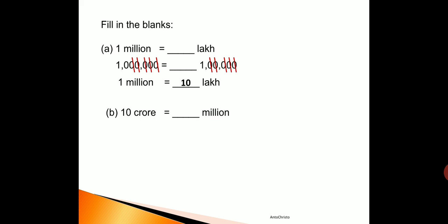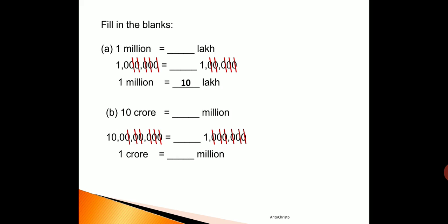Let's go to another one. The question is: ten crore is equal to dash million. First we write it in numbers — one side is ten crore, the other side is one million. Now we strike the zeros from the right corner: first zero each side, second, third, fourth, fifth, sixth zero each side. Now there are no zeros left to cut on the right-hand side. What is left on the left side is one zero zero — that means hundred. So ten crore is equal to hundred million.